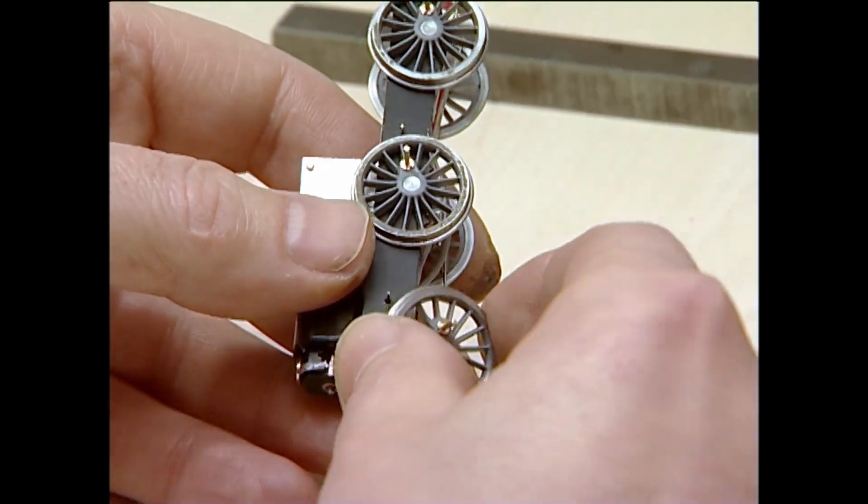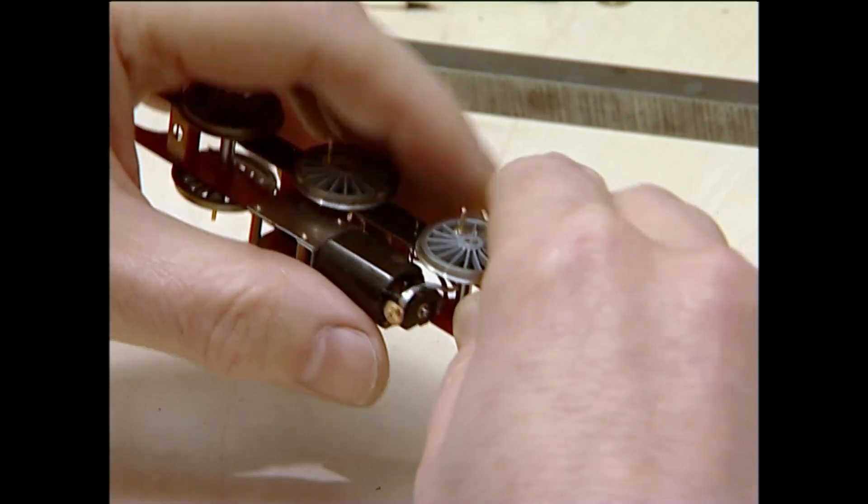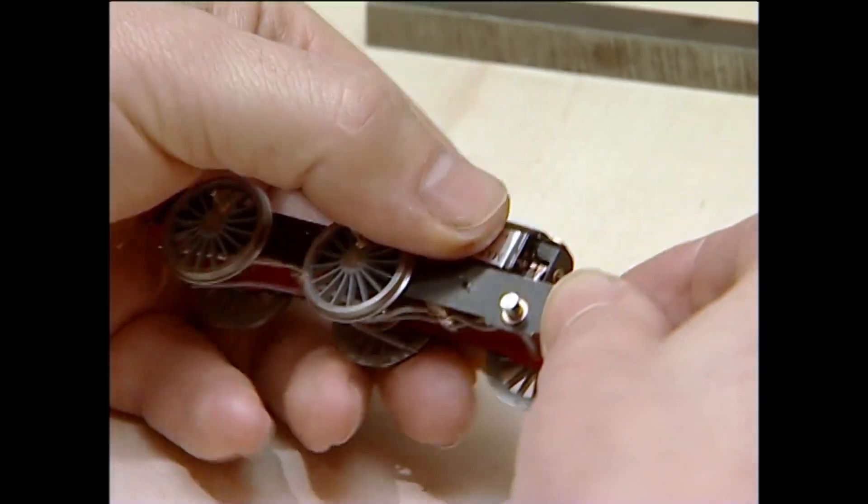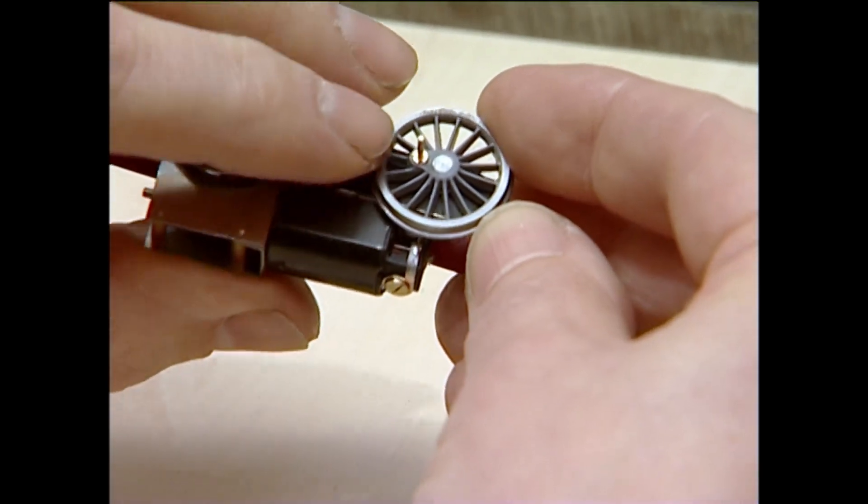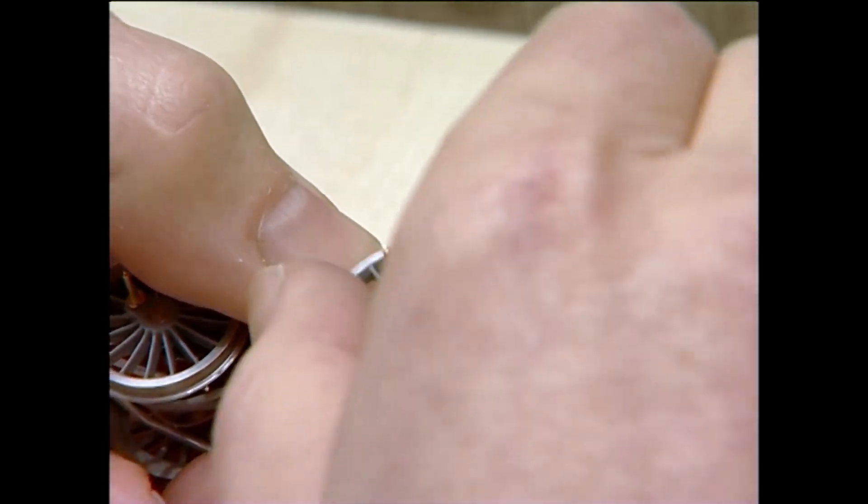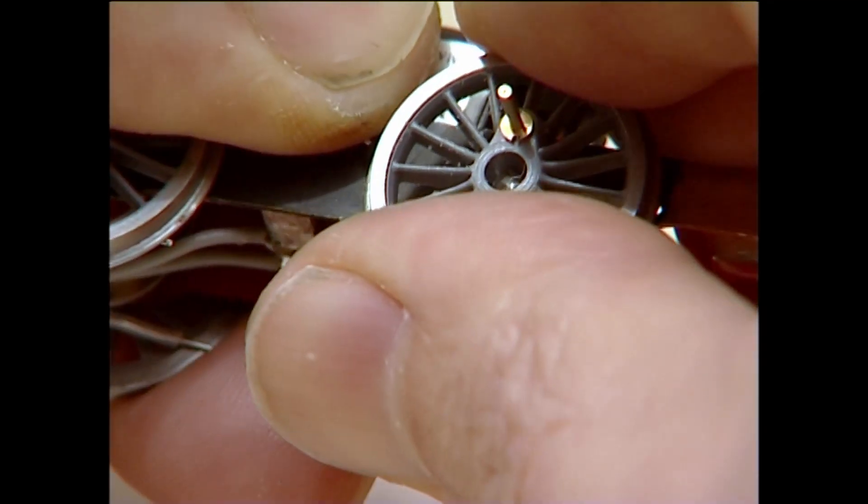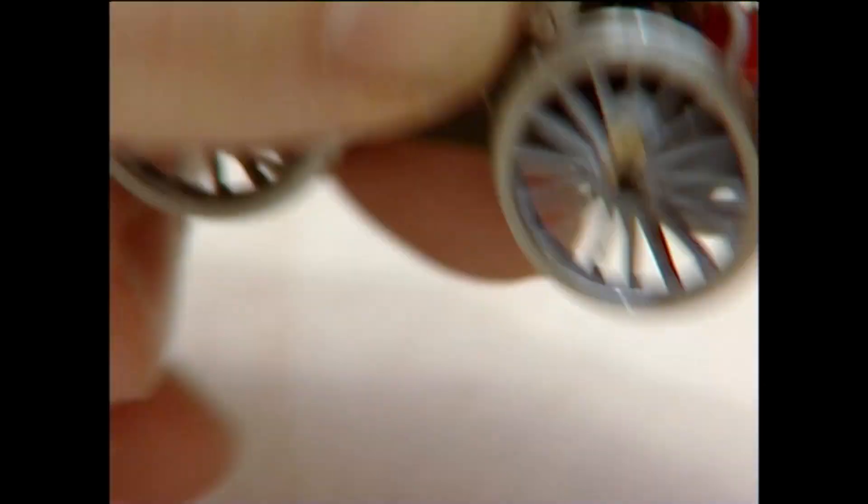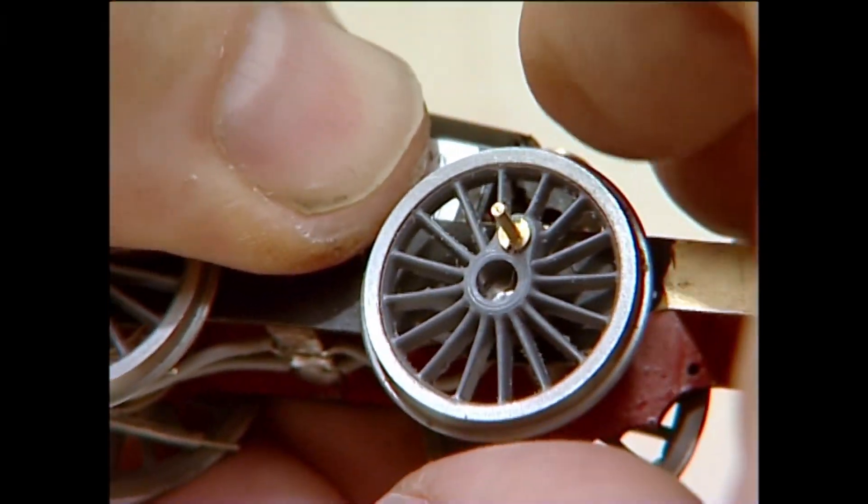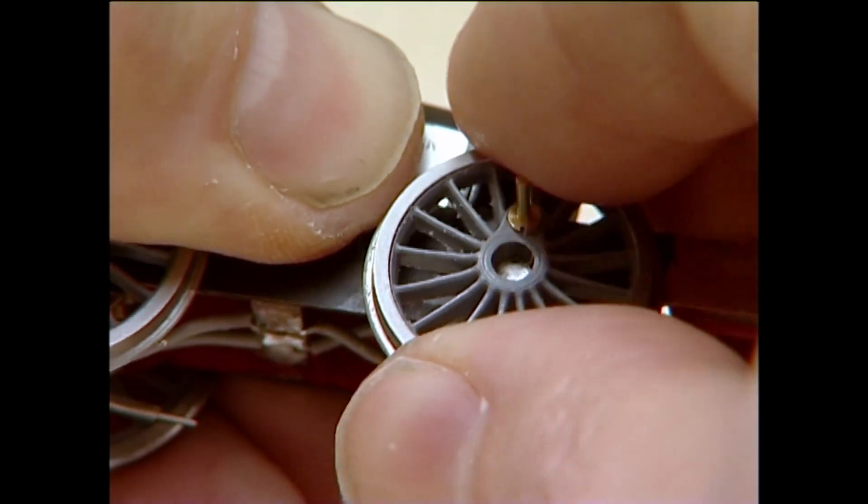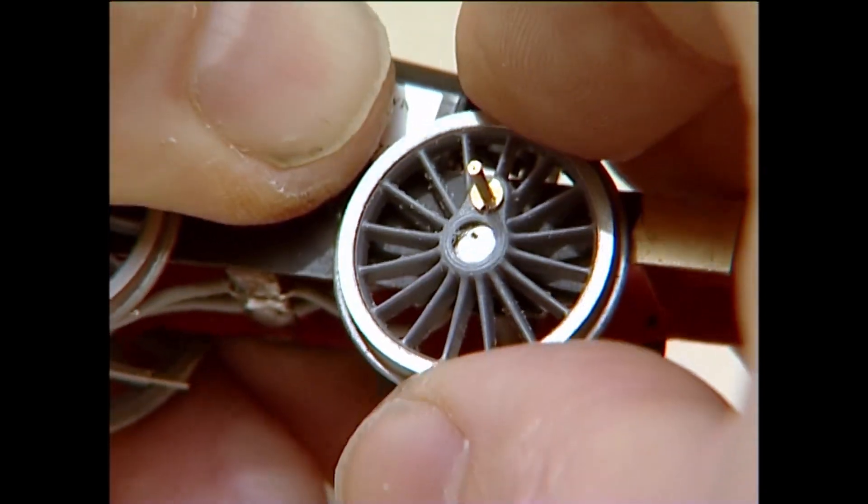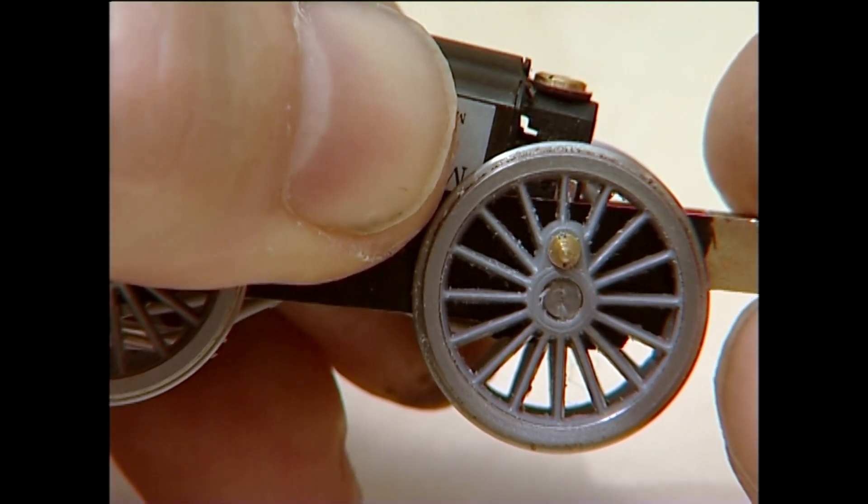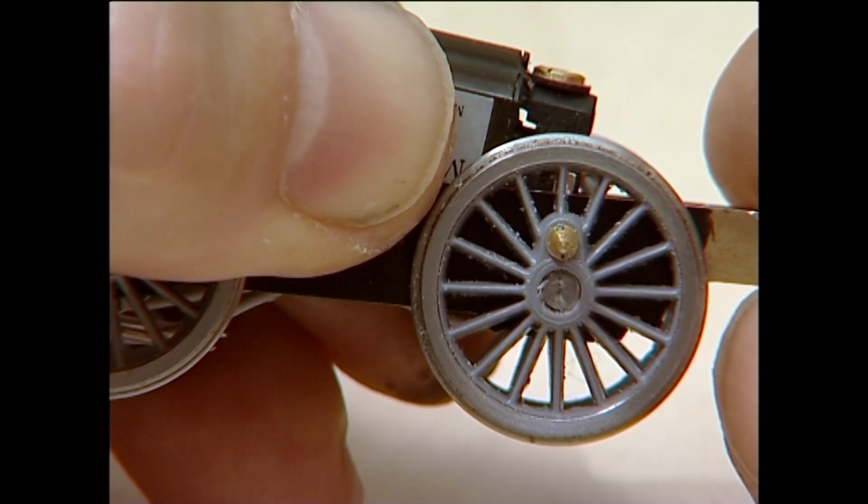The rods are now securely soldered on. Paper washers thrown away and now the chassis is under its own power. Now, considering this is brand new, it hasn't been run in at all. That's not bad at all. You'll find that when the locomotive body is fitted, the extra weight will make sure that pickup is superior, pickup is better.